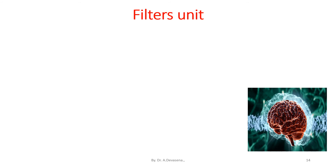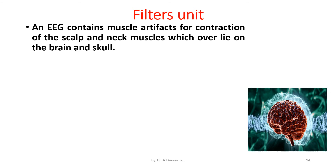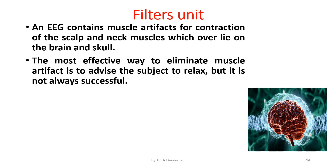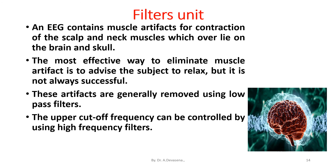Filters unit. An EEG contains muscle artifacts due to contraction of the scalp and neck muscles which overlie the brain and the cells. The most effective way to eliminate muscle artifacts is to advise the subject to relax, but it is not always successful. These artifacts are generally removed using low pass filters. The upper cutoff frequency can be controlled by high frequency filters. Some EEGs have a notch filter sharply tuned to 50 Hz so as to eliminate mains frequency interference.